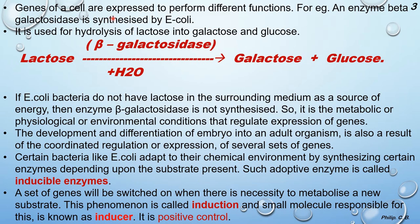Genes of a cell are expressed to perform different functions. For example, the enzyme beta-galactosidase is synthesized by E. coli. It is used for hydrolysis of lactose into galactose and glucose. The equation shows lactose forming galactose and glucose in the presence of enzyme beta-galactosidase, utilizing a water molecule.